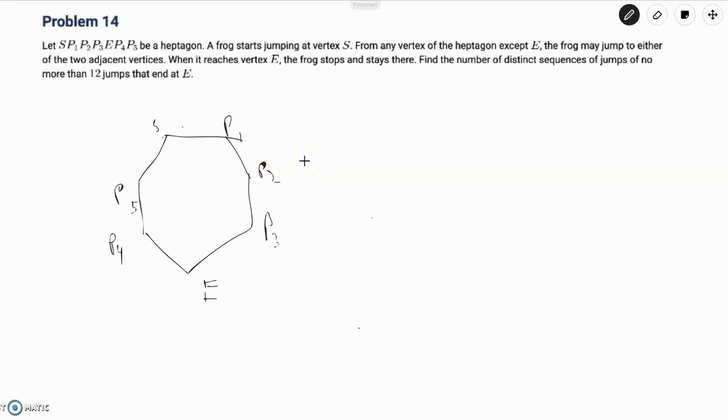However we see that the restriction is very nice for us because the frog can only jump to either of the two adjacent vertices from each vertex. So from S it can only jump to P1 or P5, and from P1 it can only jump to S or P2. Our frog is restricted in that movement and this kind of restriction motivates us to create a recursion-based algorithm because that would help us find the number of sequences of jumps of no more than 12 jumps that end at E.